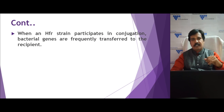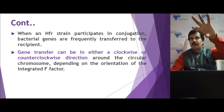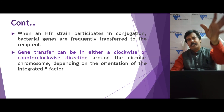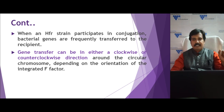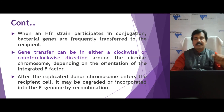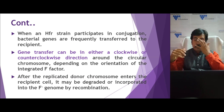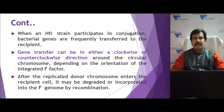The HFR strain participates in conjugation more frequently than the F plus strain — that is why we call it HFR. Gene transfer can happen by rotating clockwise or counterclockwise; a single strand is transferred and the complementary strand is synthesized. The DNA that enters the F minus strain need not be successfully integrated — sometimes restriction endonucleases can destroy it, and in other conditions it will be integrated into the F minus genome.